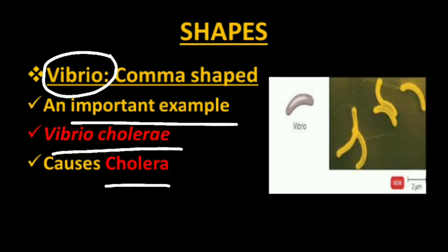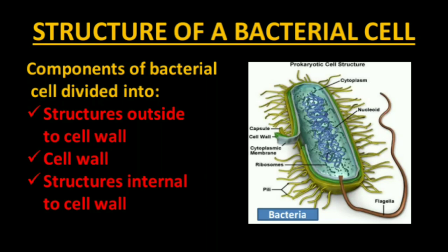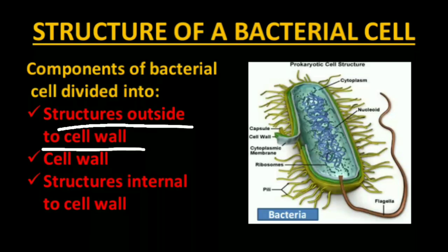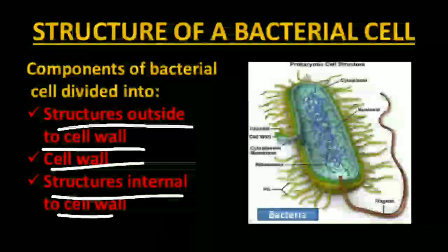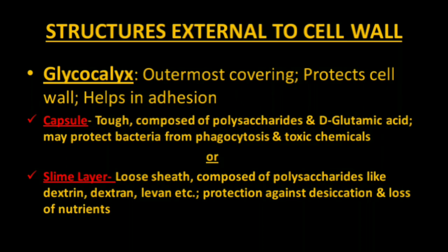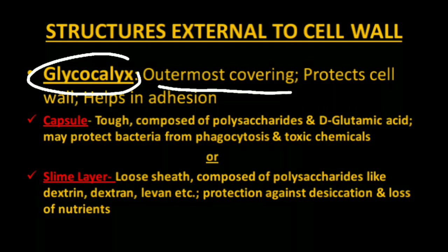Now let me talk about the structures of a bacterial cell. The components can be broadly divided into structures present outside the cell wall, the cell wall itself, and structures internal to the cell wall. This is a typical bacterial cell — you can take a screenshot of this structure. The outermost covering is glycocalyx, which protects the cell wall and helps in adhesion.